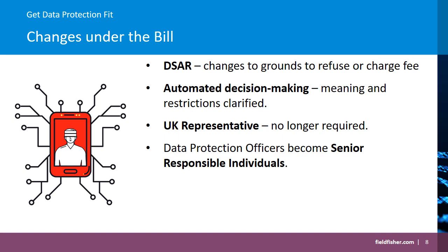Secondly, there are changes on automated decision making. The bill now prohibits automated decision making — i.e. decision making without any meaningful human involvement — which produces legal or similarly significant effects that are based solely or partly on special category data, unless you have an exemption such as consent, it is necessary for the performance of a contract, or it is required by law. Additionally, the bill specifies that additional safeguards are required where a significant decision is made based on generic processing of personal data by automated means.